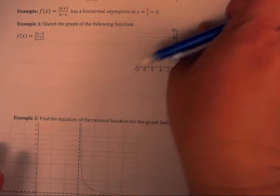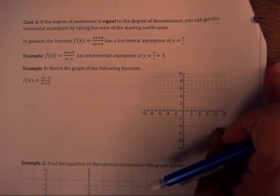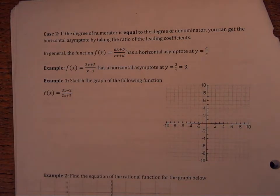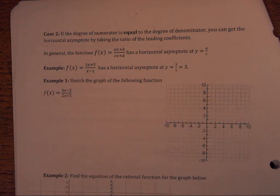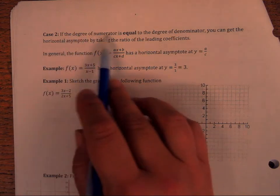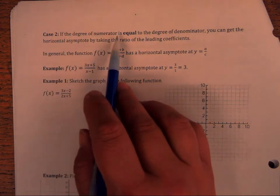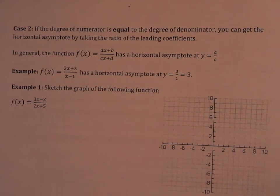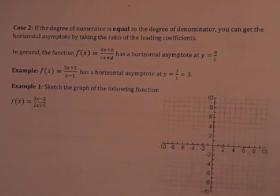We continue with rational functions. We looked at Case 1 where the degree of the numerator was less than the degree of the denominator and we had a horizontal asymptote at y equals 0. Now we're going to look at Case 2, where the degree of the numerator is equal to the degree of the denominator. You can get the horizontal asymptote by taking the ratio of the leading coefficients.